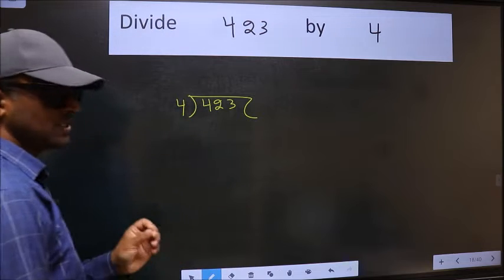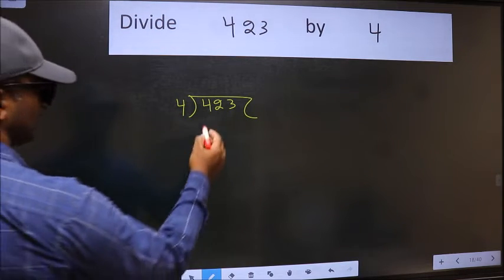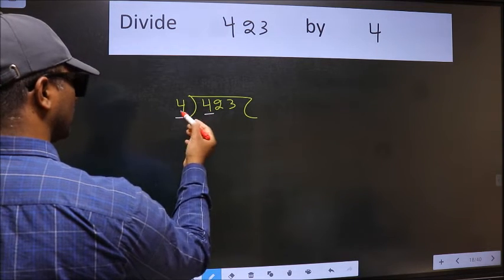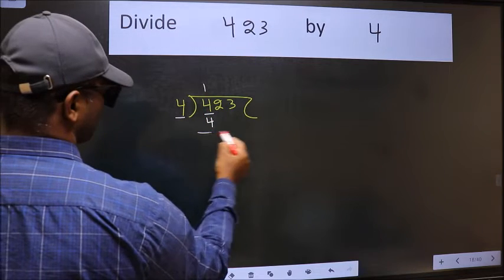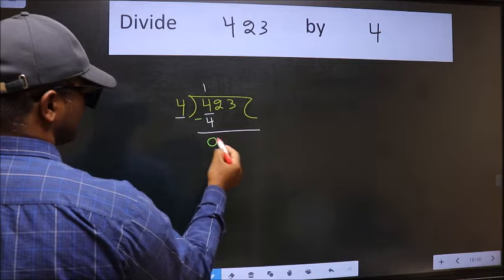This is your step 1. Next. Here we have 4 and here also 4. When do we get 4 in 4 table? 4 once 4. Now we should subtract. We get 0.